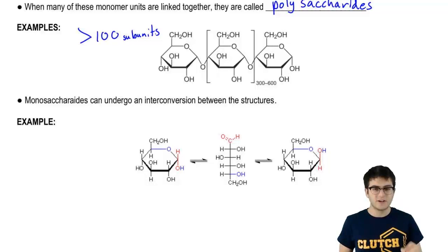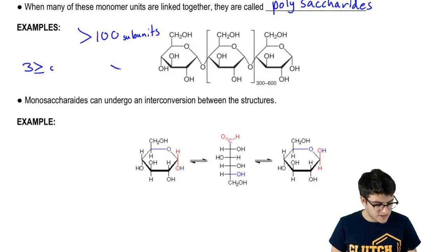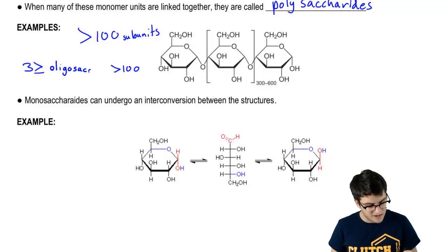It turns out that if a molecule has between three and 100 subunits, it's called an oligosaccharide.